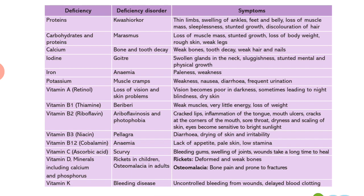Vitamin C deficiency causes scurvy — bleeding gums, swelling of joints, and wounds taking a long time to heal. Vitamin D deficiency along with minerals including calcium and phosphorus causes rickets in children and osteomalacia in adults. Rickets leads to deformed and weak bones; osteomalacia causes bone pain and tendency to fracture. Vitamin K deficiency causes bleeding disease — uncontrolled bleeding from wounds and delayed blood clotting. These are the deficiency disorders, their symptoms, covering various vitamins and proteins.